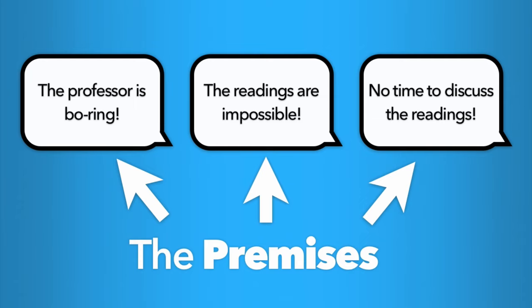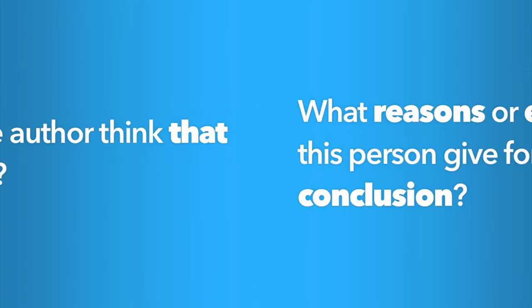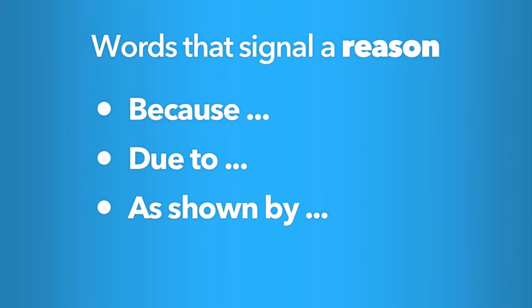In order to analyze an argument, one thing you must do is identify the premises. Ask yourself, what reasons or evidence did this person give for their conclusion? Or why does the author think that this is the answer? Sometimes, the person making the argument will make it easier on you by using key words or phrases that indicate a reason: because, due to, as shown by, given that, and so on. Be aware of such words, but don't rely on them. They won't always appear in an argument.